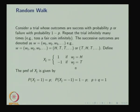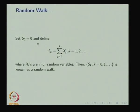We now define a sequence of random variables starting with S₀ = 0, and Sₖ = X₁ + X₂ + ... + Xₖ for k = 1, 2, .... Here the Xᵢ are i.i.d. random variables, and the sequence Sₖ — with S₀ = 0 and Sₖ being the sum of the first k random variables — defines the random walk.